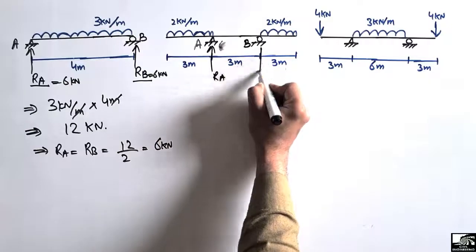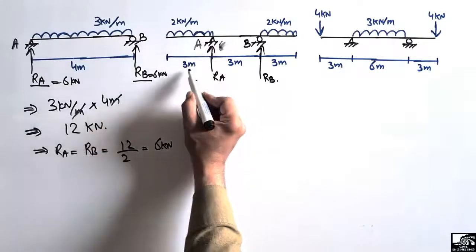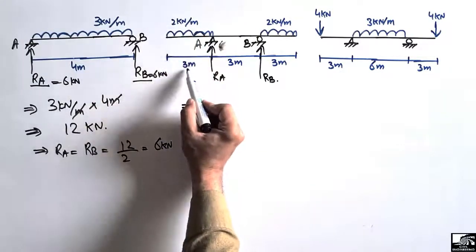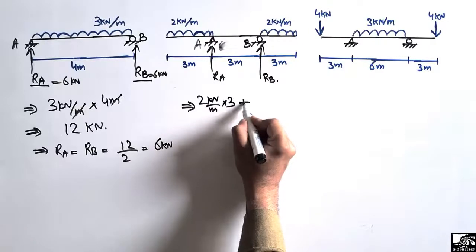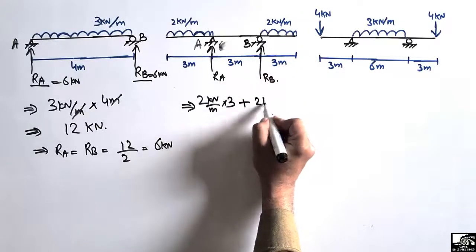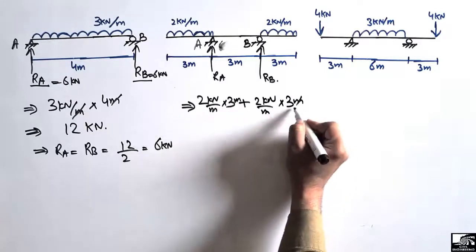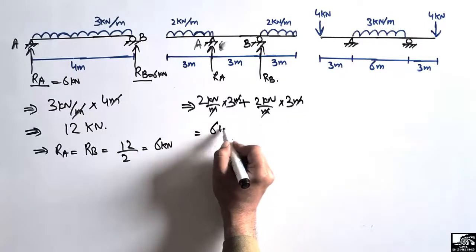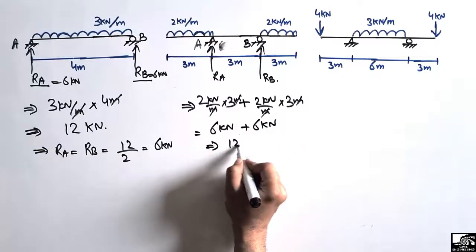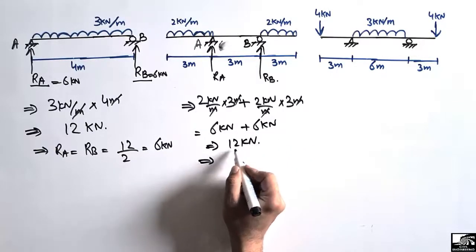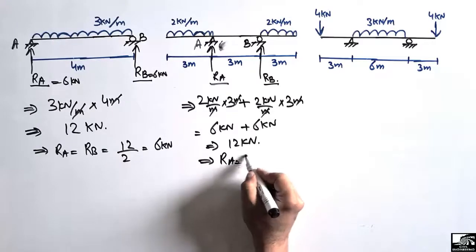To find RA and RB, we multiply the distributed load over the length. This is 2 kN/m distributed over 3 meters, so 2 kN/m × 3 m = 6 kN. Plus, the other side is also 2 kN/m distributed over 3 meters: 2 kN/m × 3 m = 6 kN. So we get 6 kN + 6 kN = 12 kN total. Dividing by 2, RA = RB = 12 ÷ 2 = 6 kN.